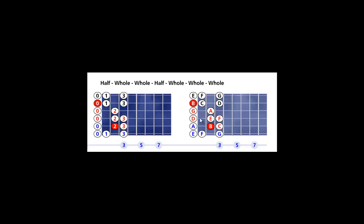From root to root, the open second string B to the root on fifth string second fret, that's one octave in red.